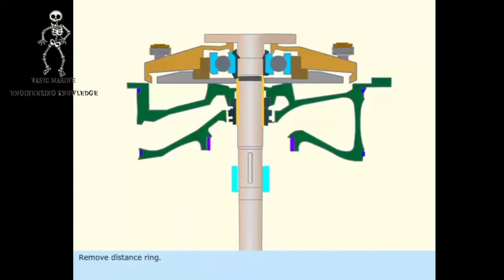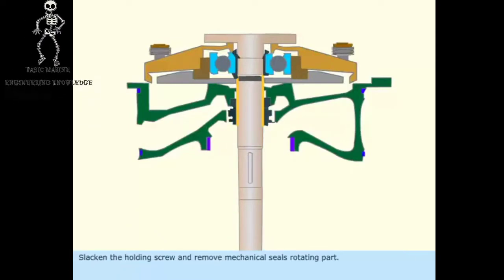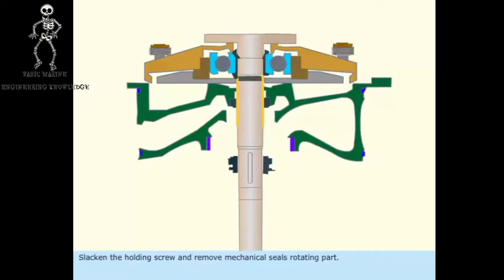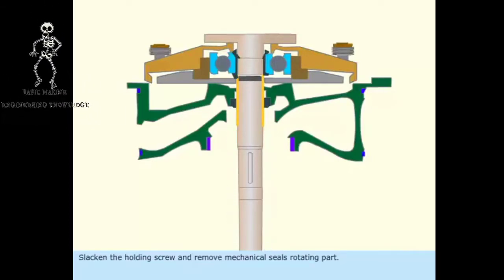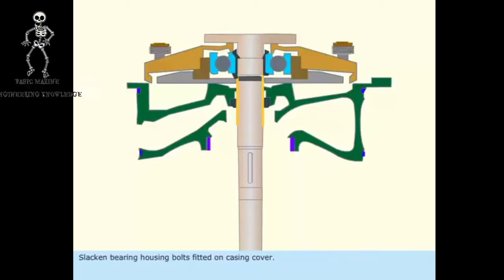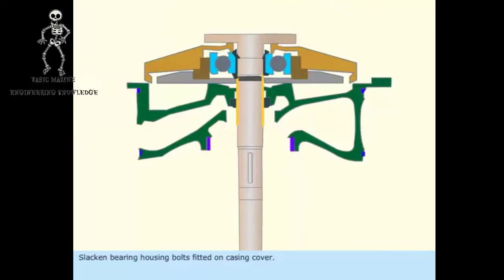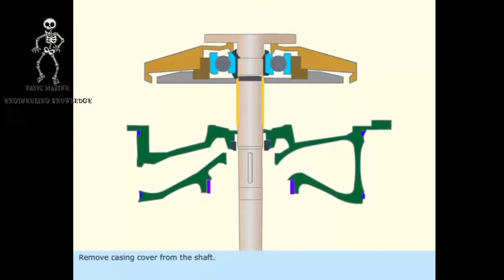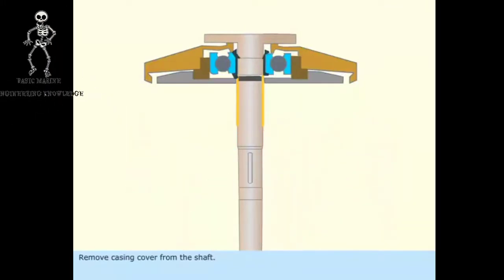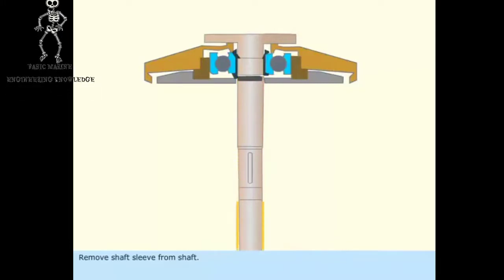Remove distance ring. Slacken the holding screw and remove mechanical seal's rotating part. Slacken bearing housing bolts fitted on casing cover. Remove casing cover from the shaft. Remove shaft sleeve from shaft.